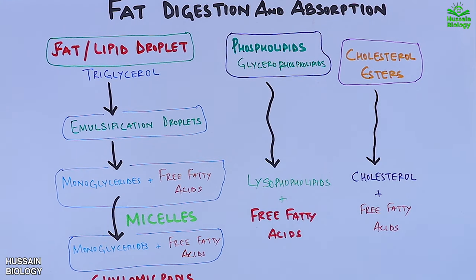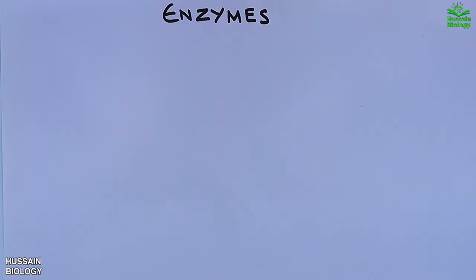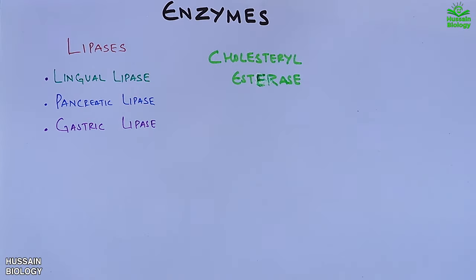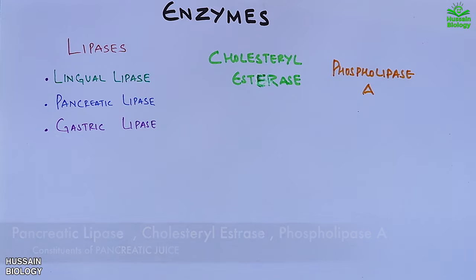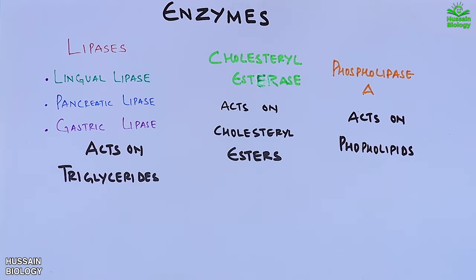Before getting into a detailed mechanism, let's look at the enzymes involved in this process. First we have the lipases — lingual lipase, pancreatic lipase, and gastric lipase. Then we have cholesterol esterase, followed by phospholipase A. Pancreatic lipase, cholesterol esterase, and phospholipase A are constituents of pancreatic juice. Lipases act on triglycerides, cholesterol esterase acts on cholesterol esters, and phospholipase A acts on phospholipids.